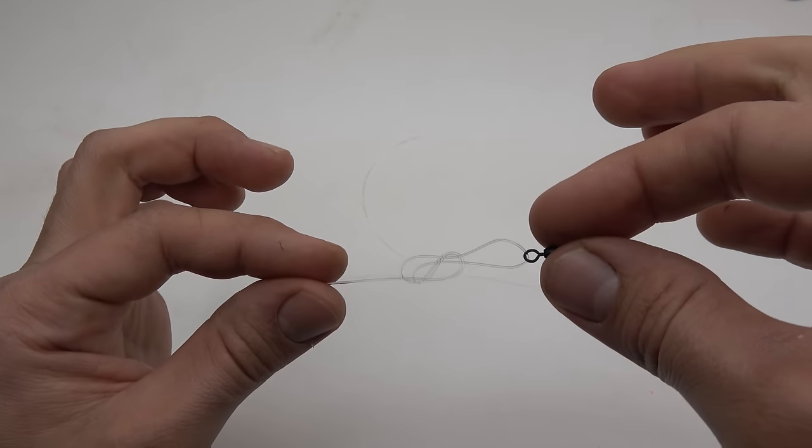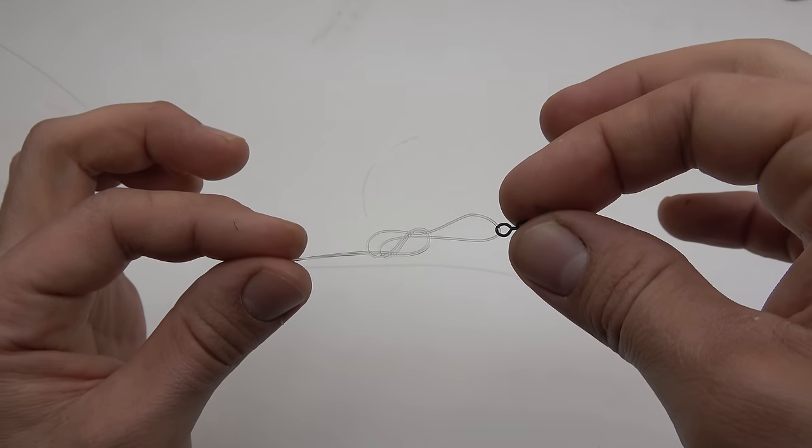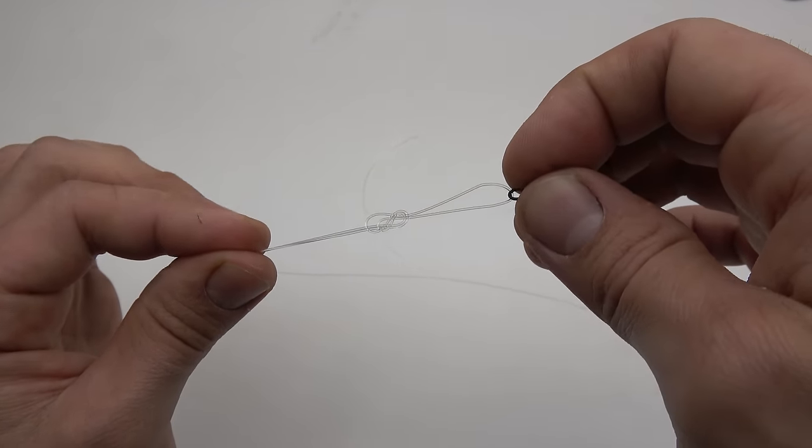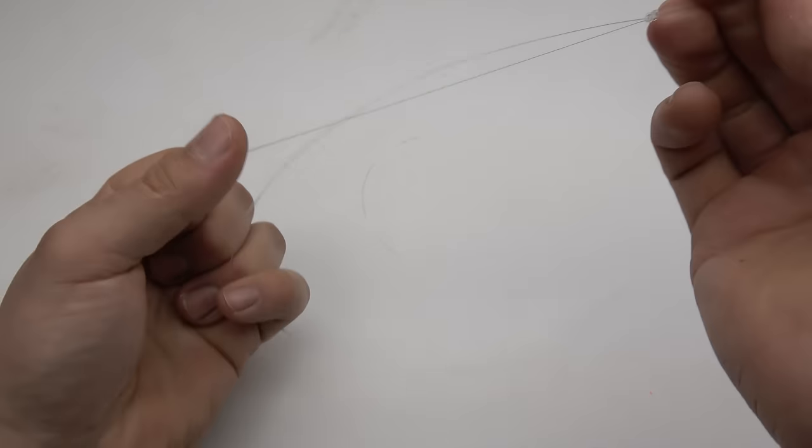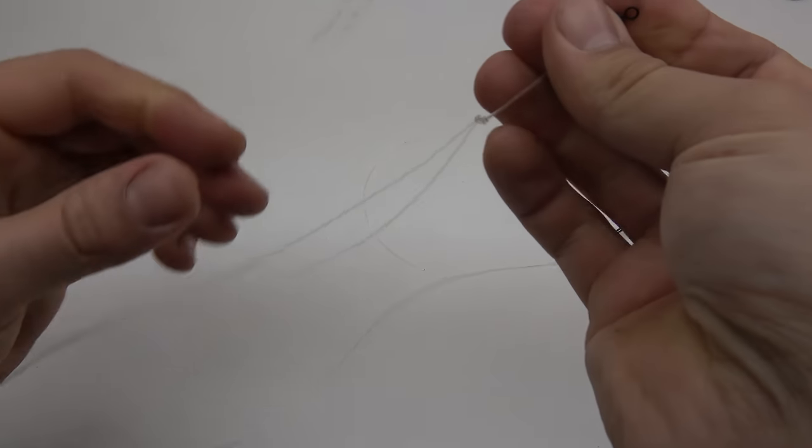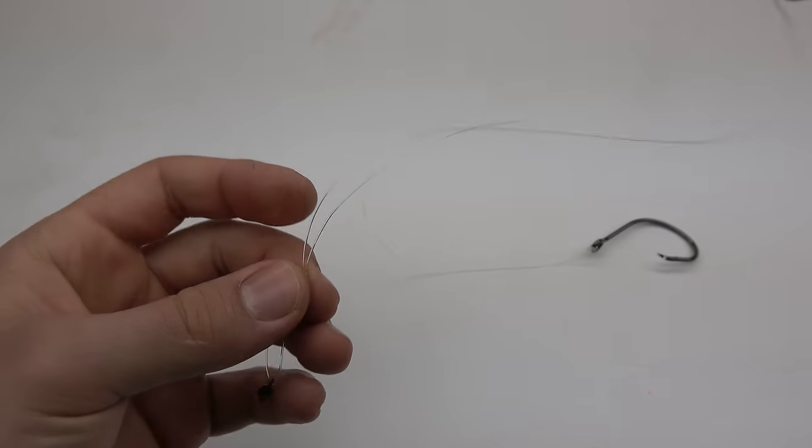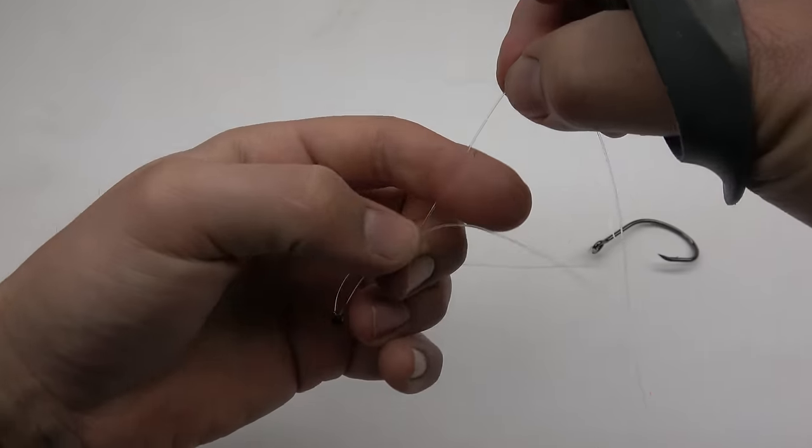There you can see why it is called the figure 8, because it looks like a figure 8. Pull that tight and then cut the tag end off once again.